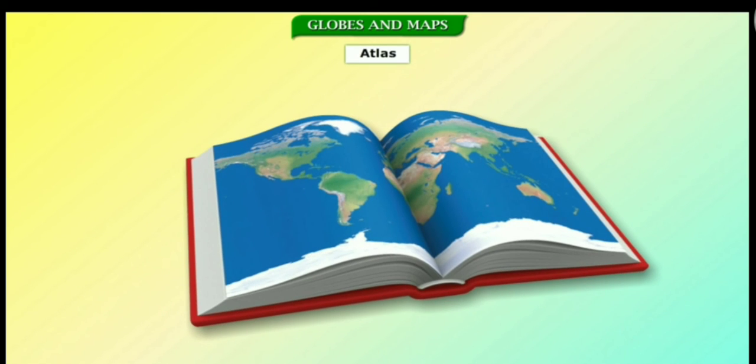An atlas is a book containing maps. It contains different kinds of maps of the continents and countries of the world.